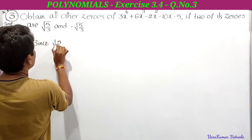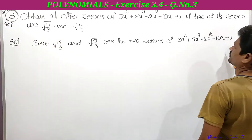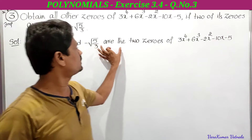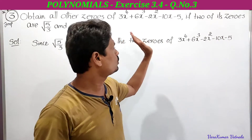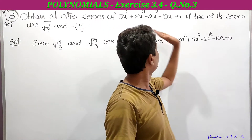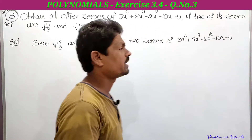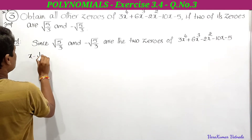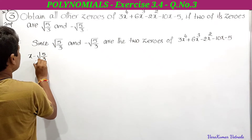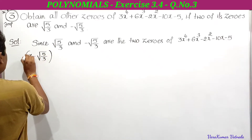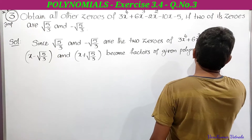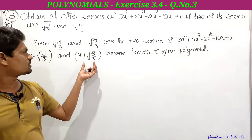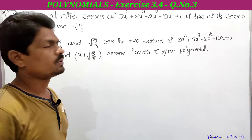Since √(5/3) and -√(5/3) are two zeros of 3x⁴ + 6x³ - 2x² - 10x - 5, by the factor theorem, (x - √(5/3)) and (x + √(5/3)) become factors of the given polynomial.